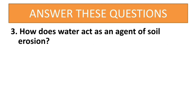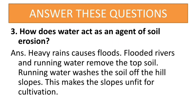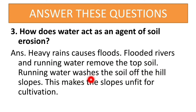How does water act as an agent of soil erosion? Heavy rains cause floods. Flooded rivers and running water remove the topsoil, and running water washes the soil of the hill slope. This makes the slopes unfit for cultivation.